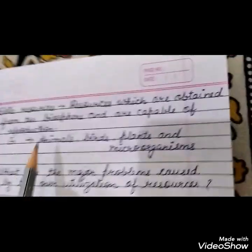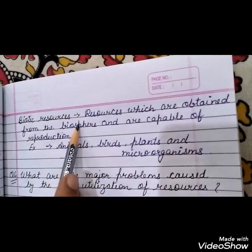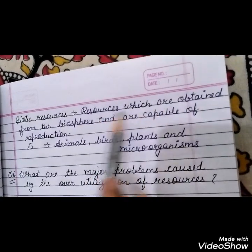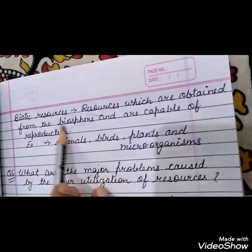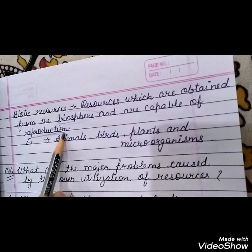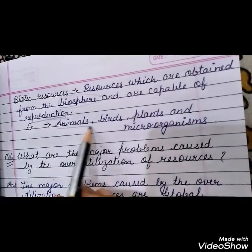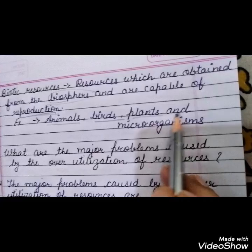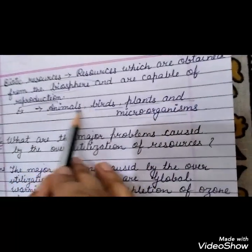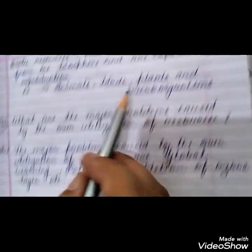Second type is biotic resources — resources which are obtained from the biosphere and are capable of reproduction. For example, animals, birds, plants, and microorganisms. Human beings are also counted among animals in this category.